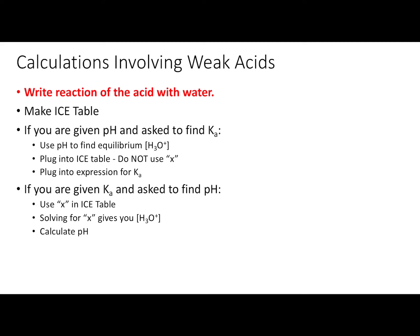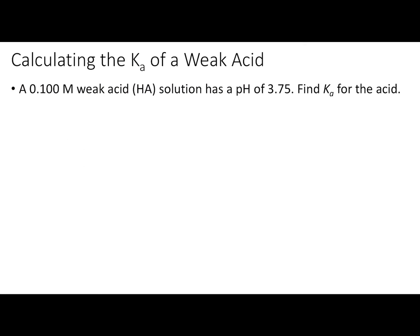You will plug those equilibrium concentrations into the Ka expression to solve for Ka. The second type of problem occurs if you are given the Ka and asked to find the pH. In this scenario, your ICE table will involve an X. You will use the X values for the equilibrium concentrations, plug those into the Ka expression to solve for X. X will equal the concentration of H3O+, and the negative log of X will give you the pH.